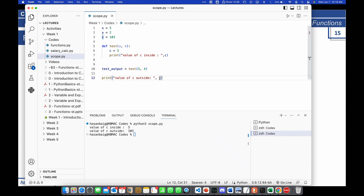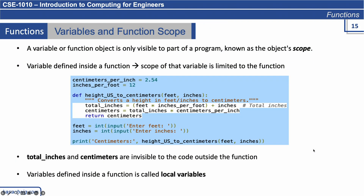This is important from an exam conceptual questions point of view. You might be given a piece of code with similar instructions and asked what the value of a variable would be. A variable defined inside a function is called a local variable. Any variable defined outside the function is generally referred to as a global variable — it is accessible globally within the program.